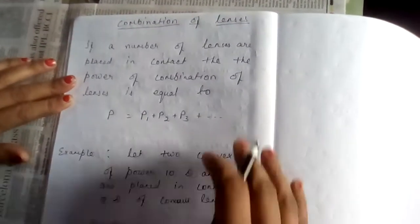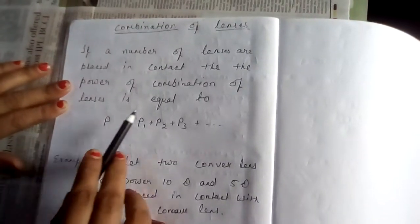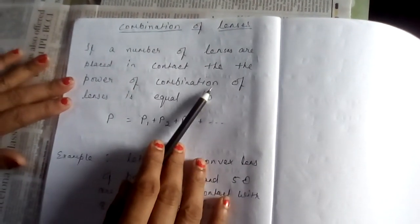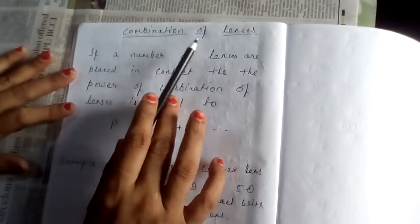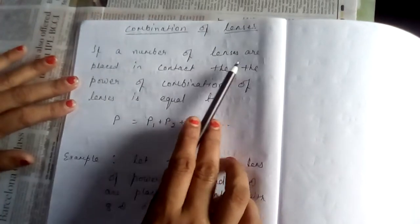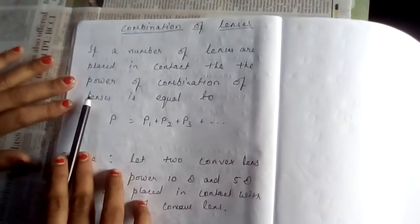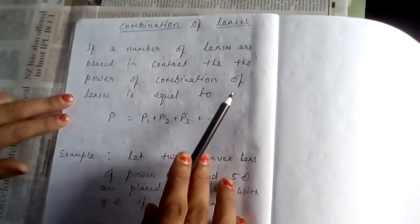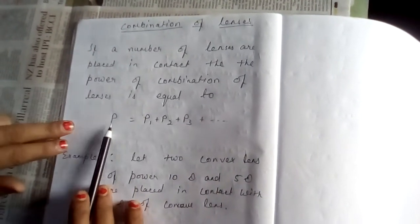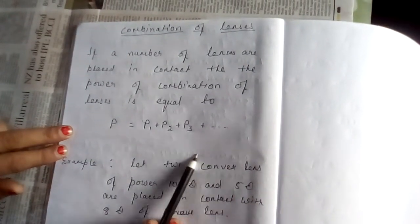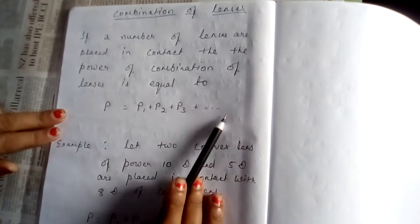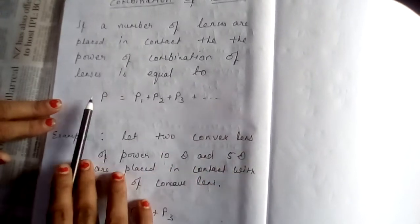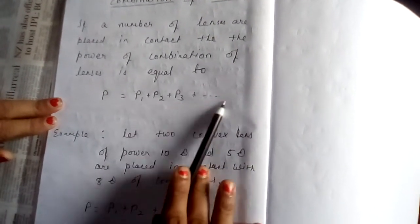What happened if in the devices there are more than 2 lenses? Here we are finding out the power of combination of lenses. If a number of lenses are placed in contact, the power of combination of lens is equal to the algebraic sum of all the power of lenses, that is individual power of lenses. So, P is equal to P1 plus P2 plus P3.